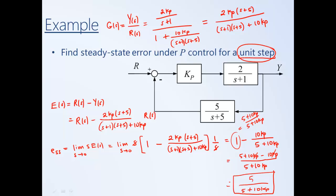This expression for steady state error is always non-zero — no matter our choice of Kp, we can't get the steady state error to zero. As we make Kp larger, the denominator grows while the numerator stays at 5, so the total approaches zero. Increasing Kp reduces the steady state error. However, in practice there's usually a limit on how large we can make Kp because it will adversely affect the transient response — causing more overshoot and hurting settling time.